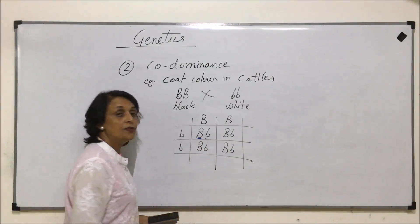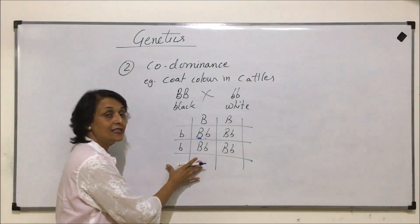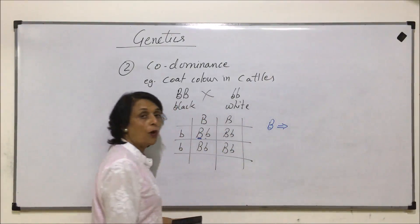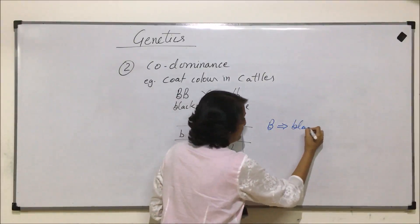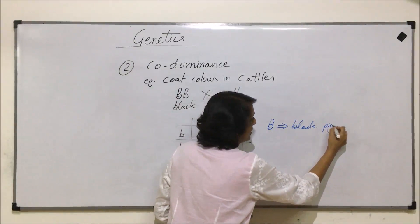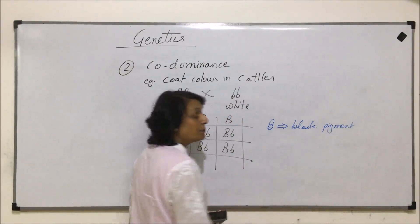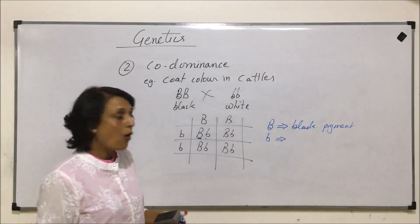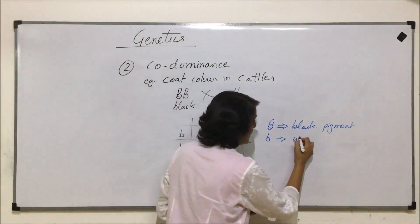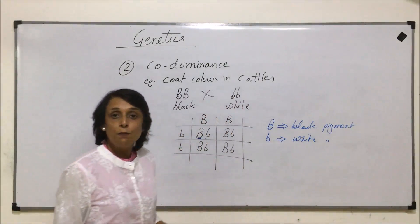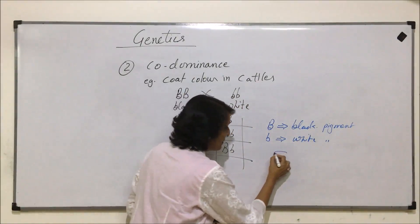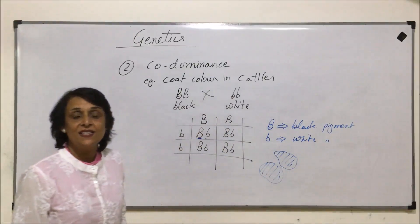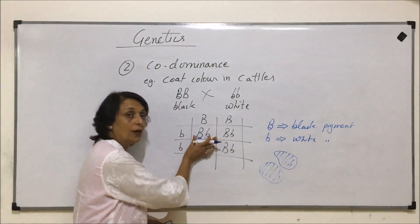However, in this type of inheritance, the B gene is responsible for formation of black pigment or black patches, and the recessive b gene is responsible for white. That means we would see a white colored coat with black colored patches. Both dominant and recessive are expressing together.